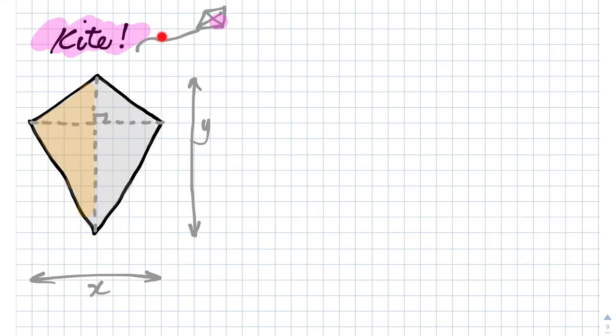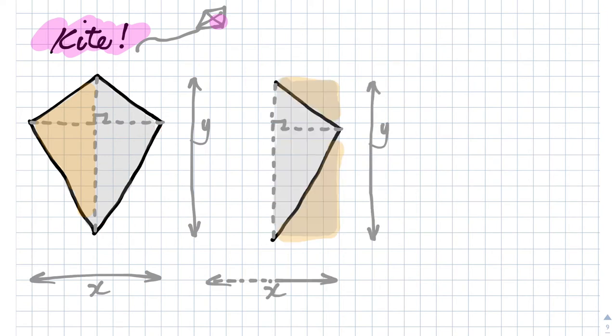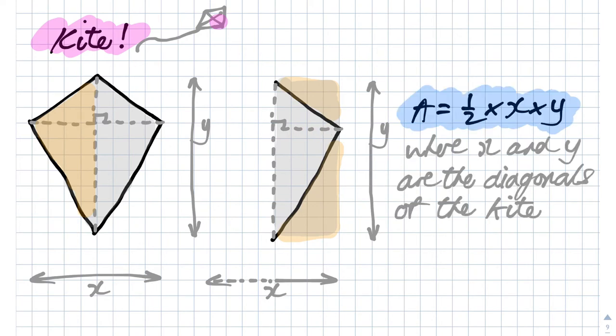The formula for the area of a kite can easily be seen if we cut this up into bits. Then if we rearrange the orange bits to fit in here, we end up with a rectangle that's got the same height as the original kite, but its width is half of the diagonal. So the area for any kite is area equals half xy, where x and y are the diagonals of the kite.